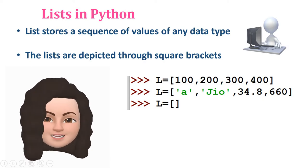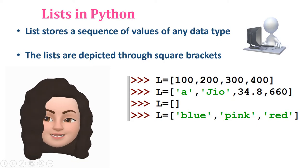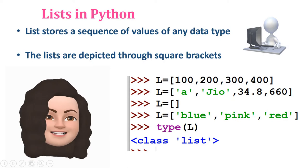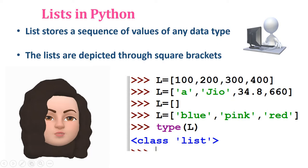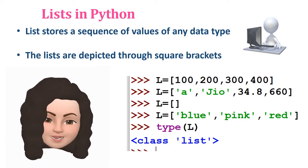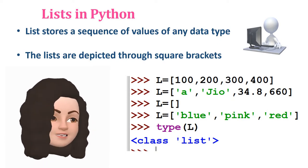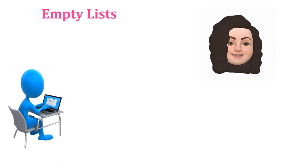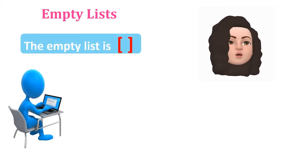Now let's check the data type of the list. Using type(L), where L contains 'blue', 'pink', 'red' — a set of strings — the output is class list, confirming it is a list data type. So a list stores a sequence of values of any data type, separated by comma and enclosed within square bracket. The empty list in Python is represented using empty square brackets with no element inside.